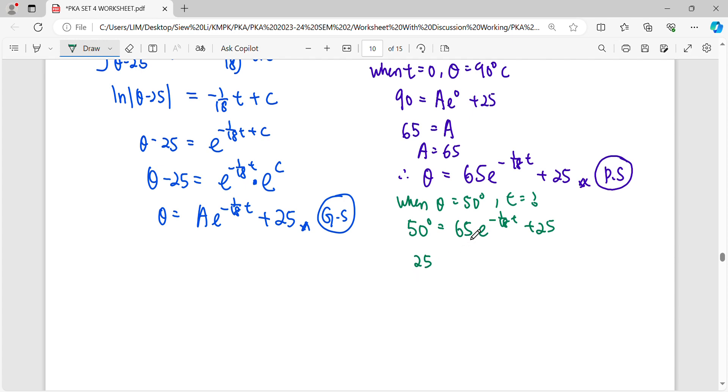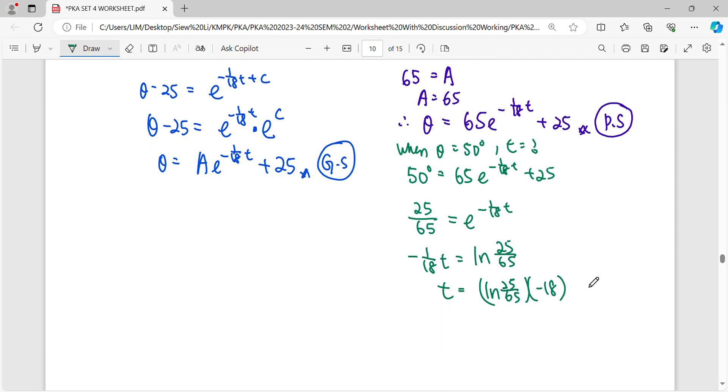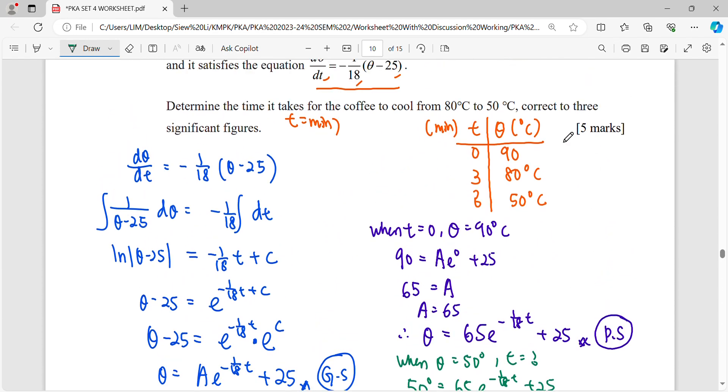50 minus 25. 25. And then the coefficient when you move back will be divided by 65. e negative. Then when you move back will become log. Then when you find your t. It will be log 25 over 65 times negative 18.